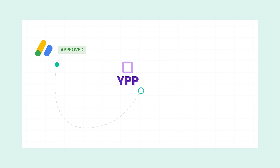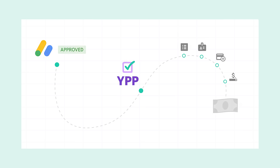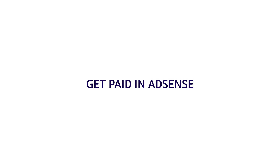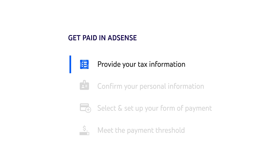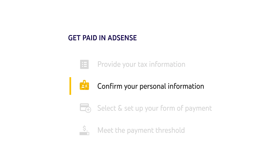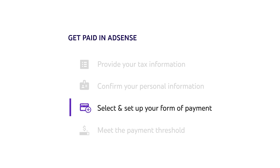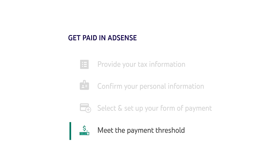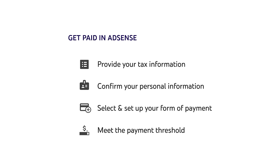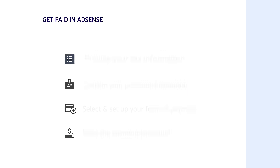Once your AdSense account is set up and approved and you're accepted into the YouTube Partner Program, there are still a few steps you need to take before getting paid. To get paid in AdSense, you'll need to provide your tax information, confirm your personal information, select and set up your form of payment, and meet the payment threshold. Let's walk through each one of these steps.